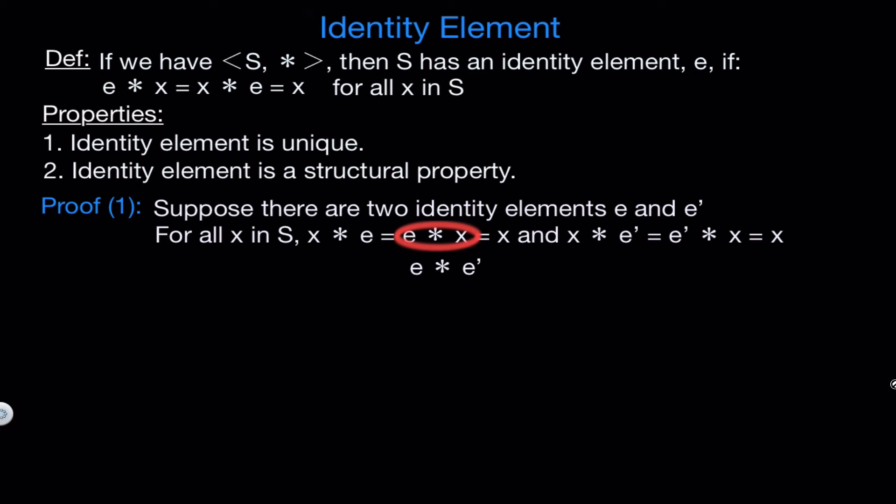But now what happens when we take e star e'? Looking at the identity e, this tells us that this equals e', but focusing on the identity e', this tells us that this equals e. So we can conclude that e is actually equal to e', so they are the same, and we have shown that a structure can have no more than one identity element.